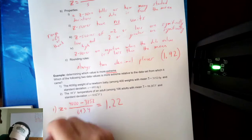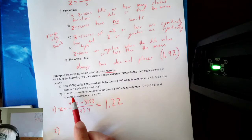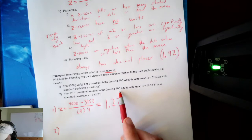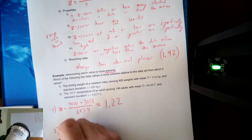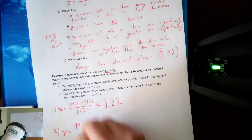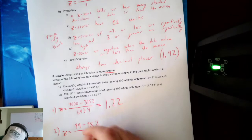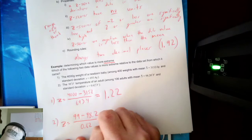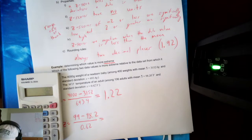The second data point is a 99-degree Fahrenheit temperature of an adult from a sample of 106 with a mean of 98.2 and a standard deviation of 0.62. This z-score equals 99 minus 98.2, divided by 0.62. Typing that into the calculator gives me 1.29. Remember, always two decimal places.